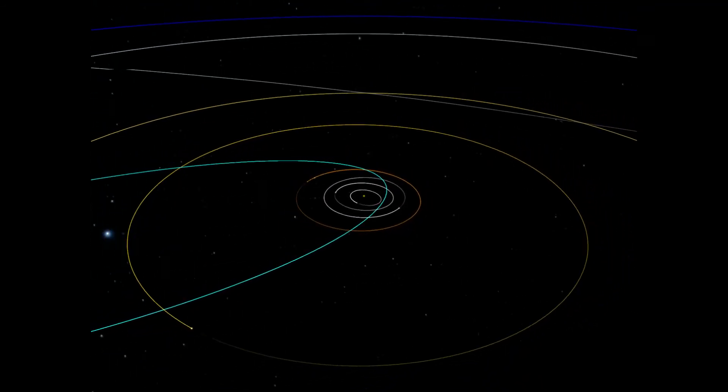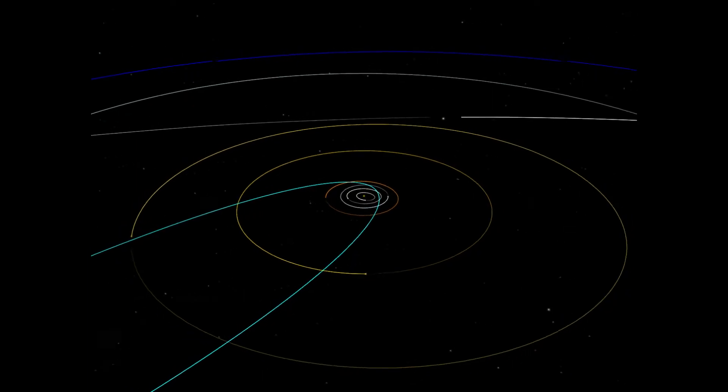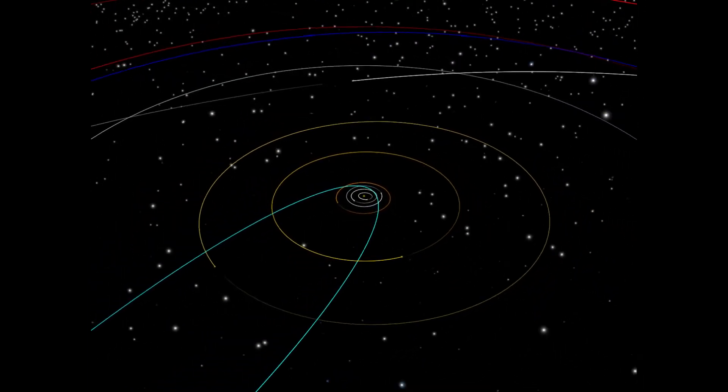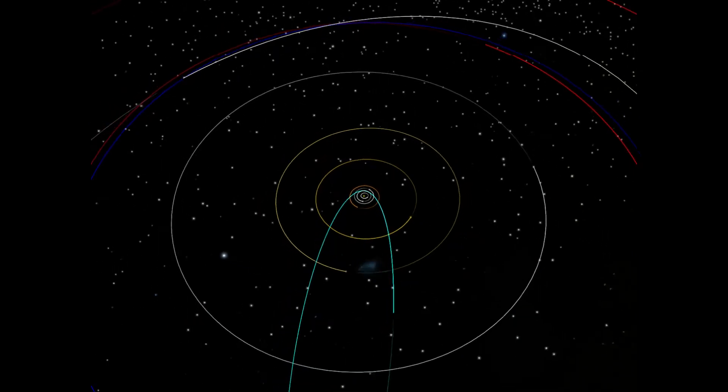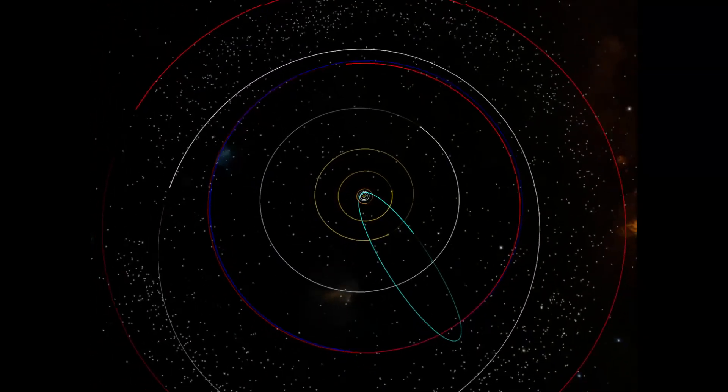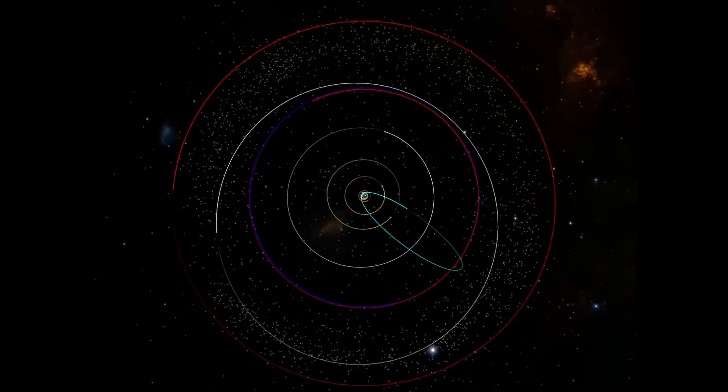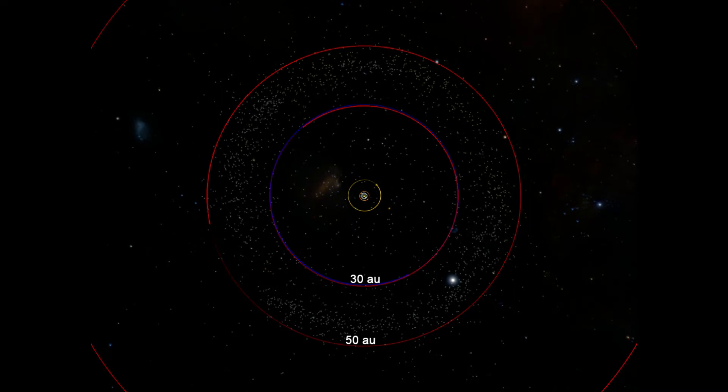Originally, astronomers believed Halley's comet came from the Kuiper Belt. Similar to the asteroid belt between Mars and Jupiter, the Kuiper Belt is a ring of rocks and dust from the creation of our solar system. The Kuiper Belt is one of the largest regions in our solar system, and its inner edge is formed by Neptune's orbit at 30 astronomical units, or AU. The main region ends around 50 AU.